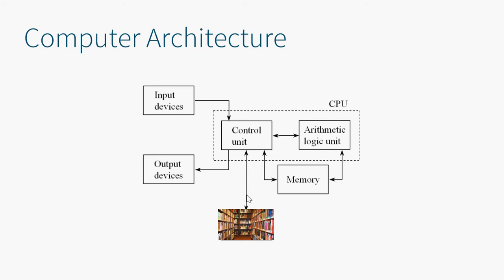I would say external storage is like a library for books — there's a huge amount of space to store data but it may take a while to retrieve them, and all books you are currently not working with are stored there. The memory is like a desk — the books you are currently working with are placed there. And the CPU arithmetic unit is what basically does the calculations.